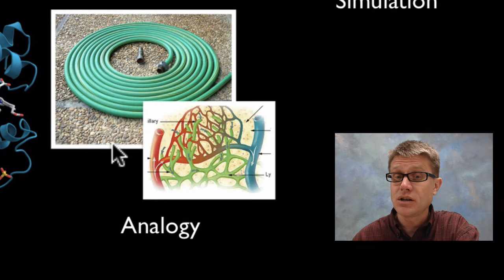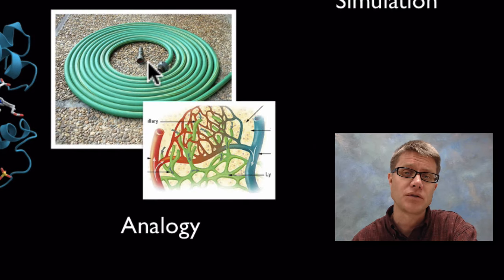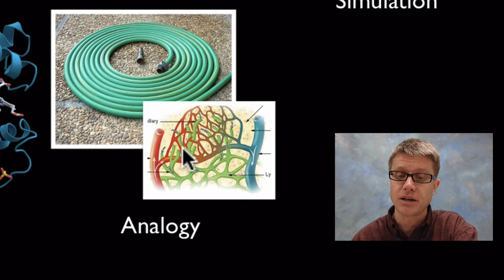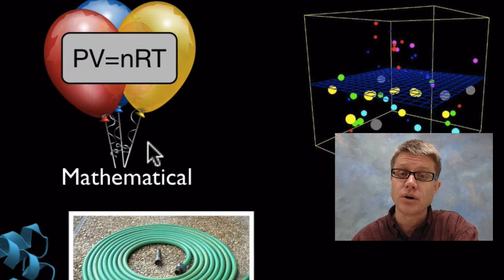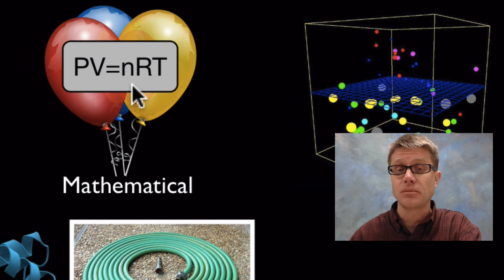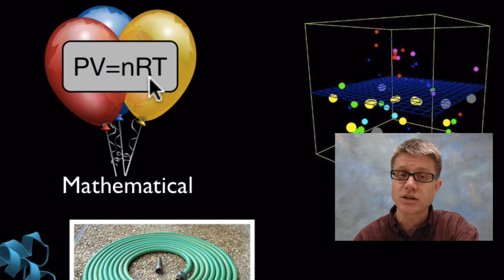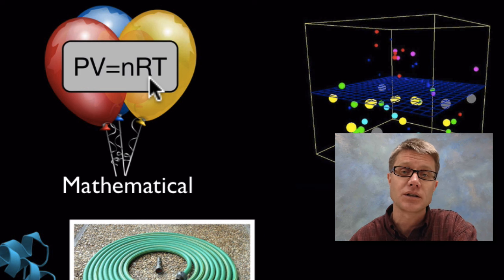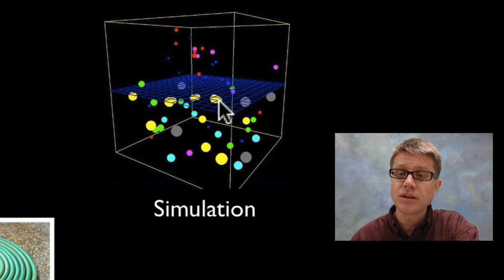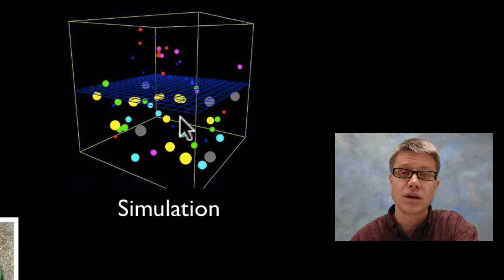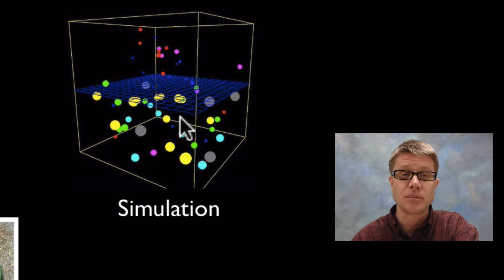We could use an analogy as a model — for example, if I understand how fluid moves through a hose, I can use that to explain how blood is going to move through vessels. Or I could use just a mathematical model, like the ideal gas law, which is simply a formula that explains what happens as we increase pressure, decrease volume, or increase temperature. Or even a simulation — this is a simulation of osmosis as water moves through a semi-permeable membrane.